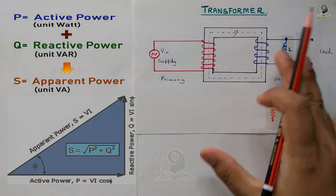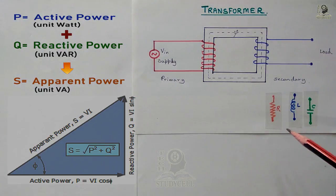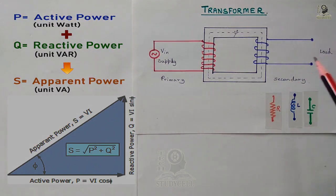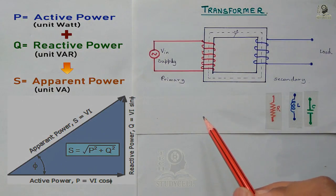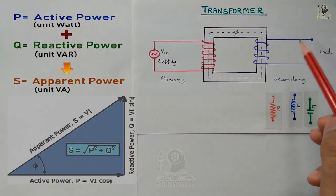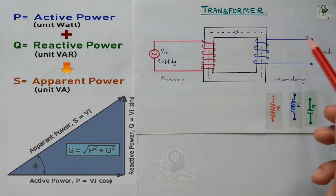In practice, there are no loads which are purely resistive or purely inductive. When supplying any electrical circuit or any load, we have to supply both active and reactive power. So we have to supply the apparent power, whose unit is VA — voltage ampere. As we give supply through a transformer, the transformer has to supply both active and reactive power to the load. So the transformer is rated in kVA, or VA, or if the rating is much higher, then in MVA.